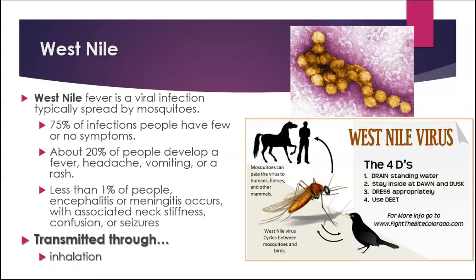Another virus we actually have here in College Station is West Nile virus, and it's spread by mosquitoes. Most of the time people get infected, they don't even have any symptoms, or they have very mild symptoms and may not realize it. Some people get a headache and fever. However, some people have a very bad infection — they get encephalitis, which is inflammation or infection of the brain or the linings around the brain and spinal cord, which can cause paralysis, confusion, and seizures. But it's not transmitted through inhalation — it's transmitted through the bite of an insect.